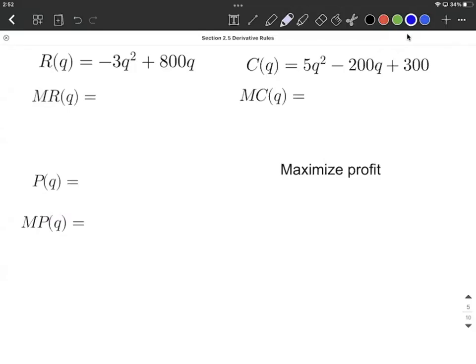Okay, we're given a revenue function and a cost function, and we want to find the marginal revenue, marginal cost, the profit function, and the marginal profit function. And then after we do all those different steps, we're going to try to maximize our profit.